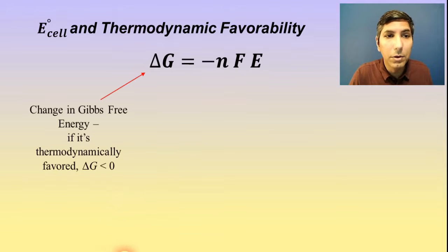As we've already learned in Unit 9, we know that delta G is the quantitative measurement of how thermodynamically favored a process is. If it's thermodynamically favored, delta G is going to be a negative number. If it's not thermodynamically favored, delta G will be a positive number.